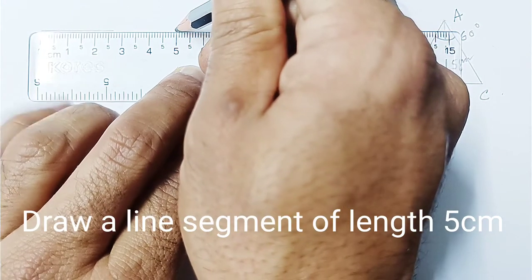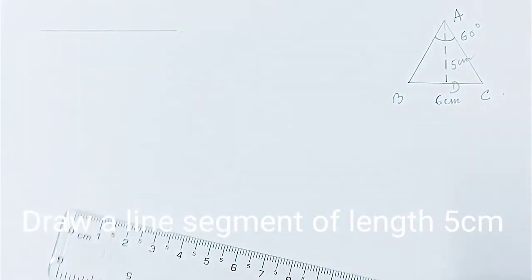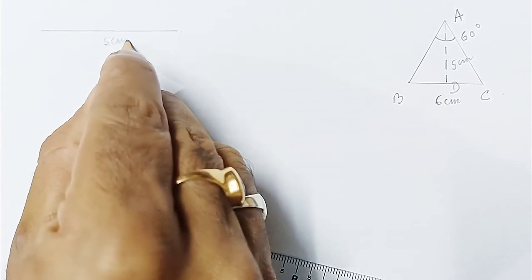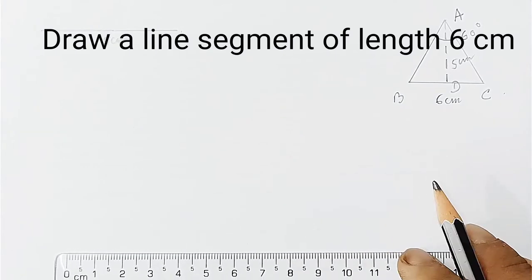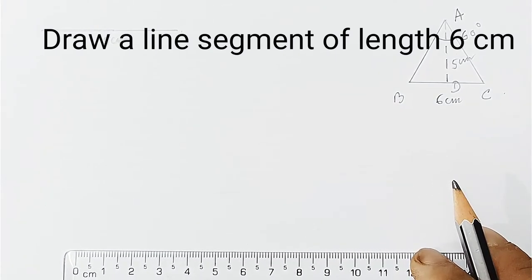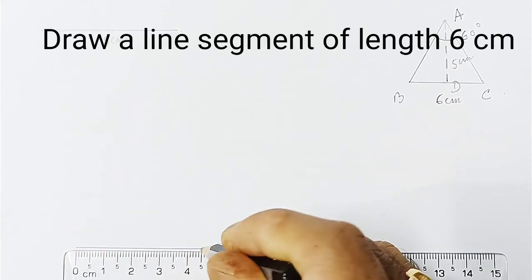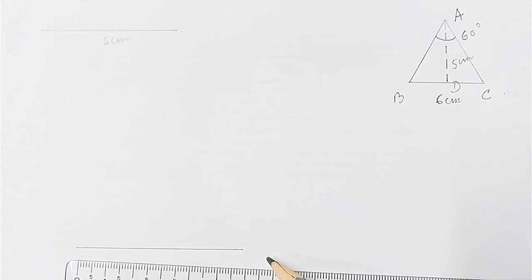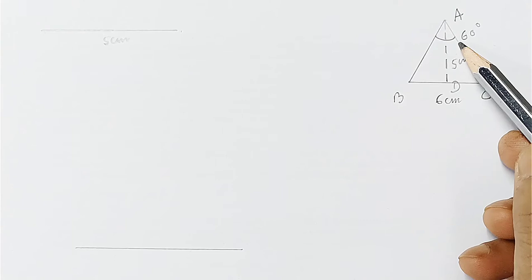I am drawing a line segment of length 5 centimeters — this is the 5 centimeter segment. Now the base of the triangle is 6 centimeters, so draw one line segment of length 6 centimeters. As the base is 6 centimeters, we have drawn it here.